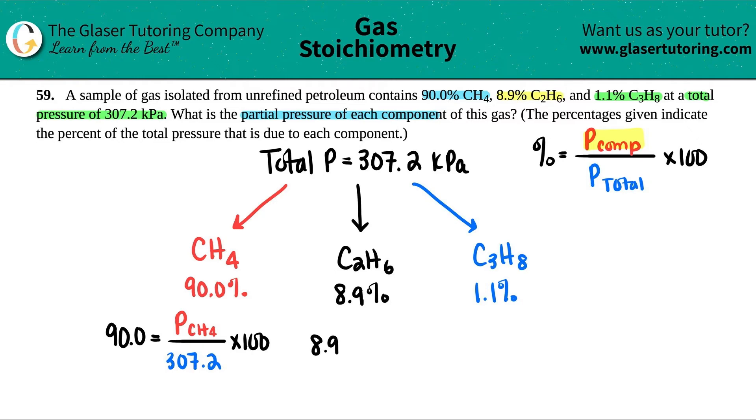The next one, if we just set this up, it would be 8.9 equals something divided by something times 100. And in this case, we're looking for the pressure of C2H6, and that would be over the total pressure, 307.2. And then lastly, it would be 1.1 equals something over something times 100. And in this case, it would be the pressure of C3H8 over the total pressure, which is 307.2.